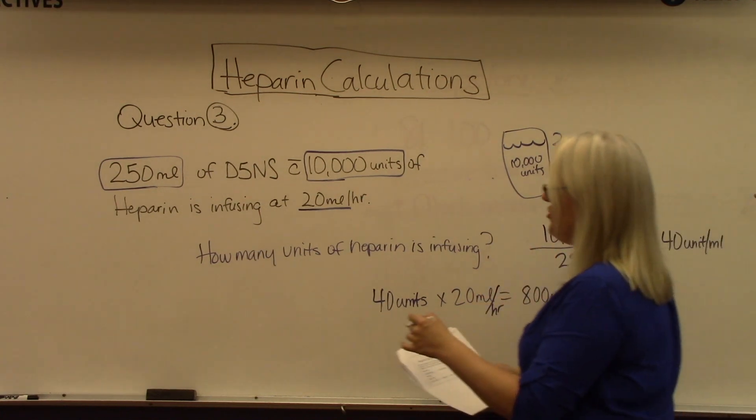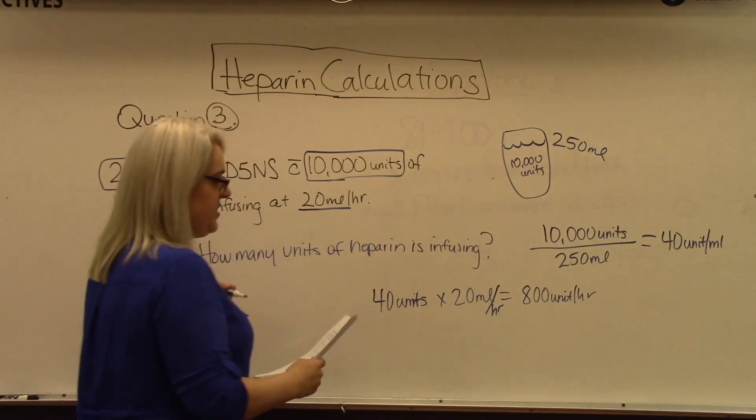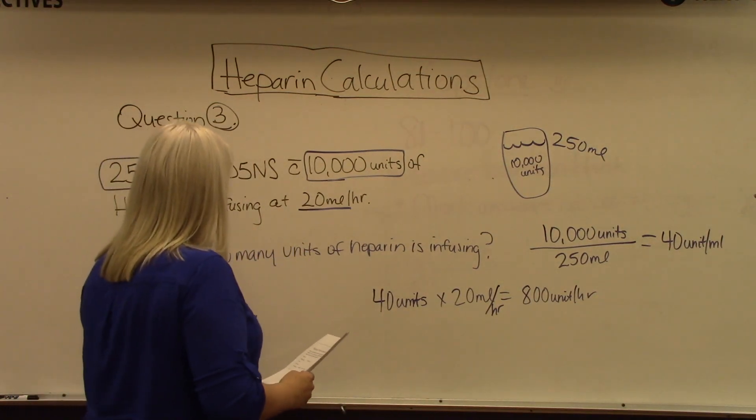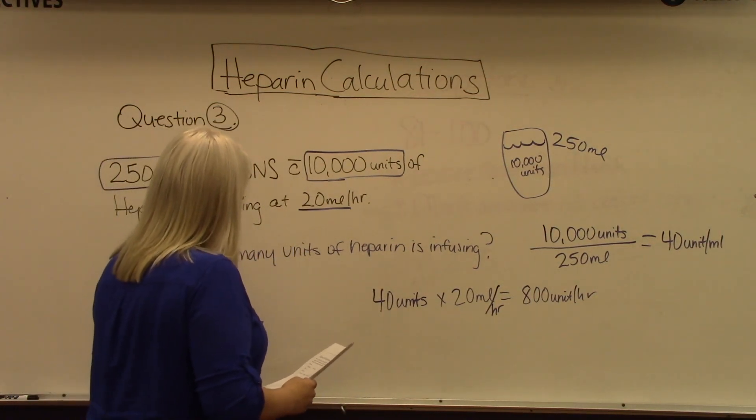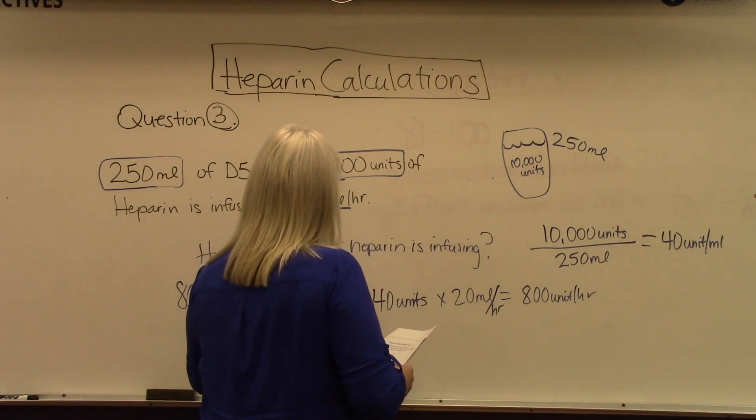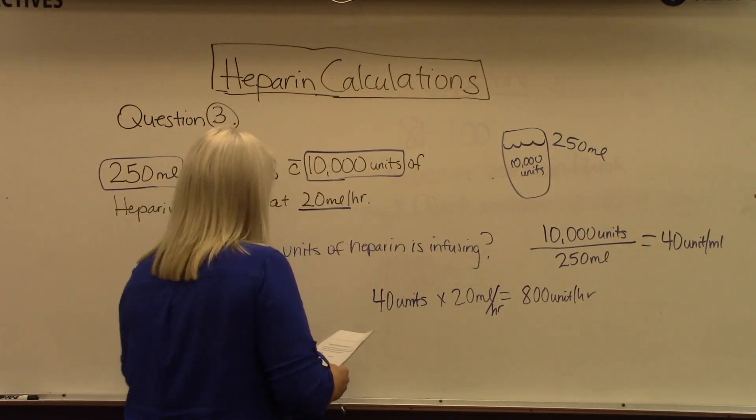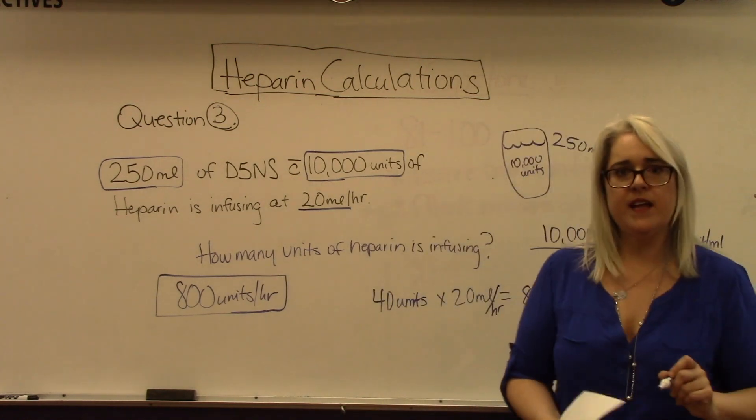So the answer to this question is how many units of heparin is infusing? There's 800 units infusing every hour. And that's how we solve that equation.